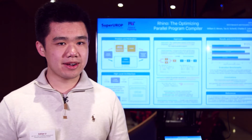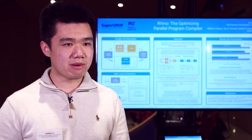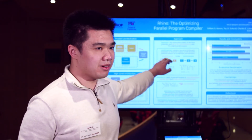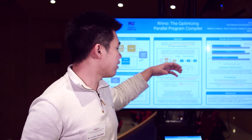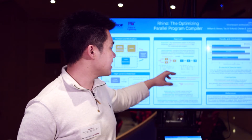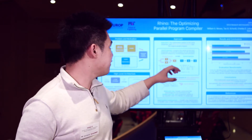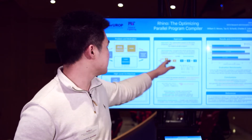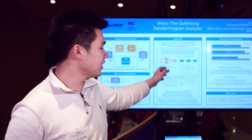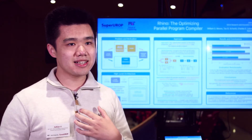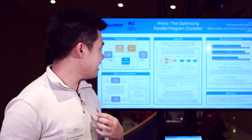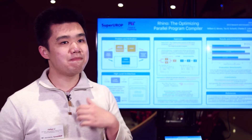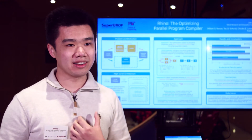In order to address this, we drew our inspiration from a prior project called Taper. When we have a parallel program, we create a mirror program of it that does the exact same computation, but we get rid of all the parallel constructs — we call it the serial projection of this parallel program. We then run the compiler optimizations on the serial projection, and for each transformation the optimization does, we mirror it back onto the parallel program that we want to optimize.